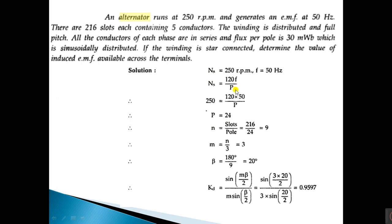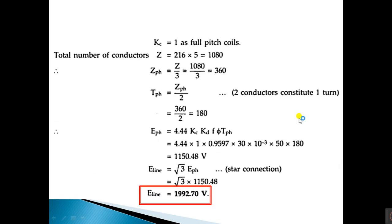Given: ns = 250 rpm, f = 50 Hz, slots = 216, conductors per slot = 5, flux = 30 mW. First, calculate p using ns = 120f/p: 250 = 120×50/p, giving p = 24. Then n = 216/24 = 9 slots per pole. m = 9/3 = 3 slots per pole per phase. Beta = 180/9 = 20 degrees. Applying in kd formula: sin(3×20/2) / (3×sin(20/2)) gives kd = 0.9597.